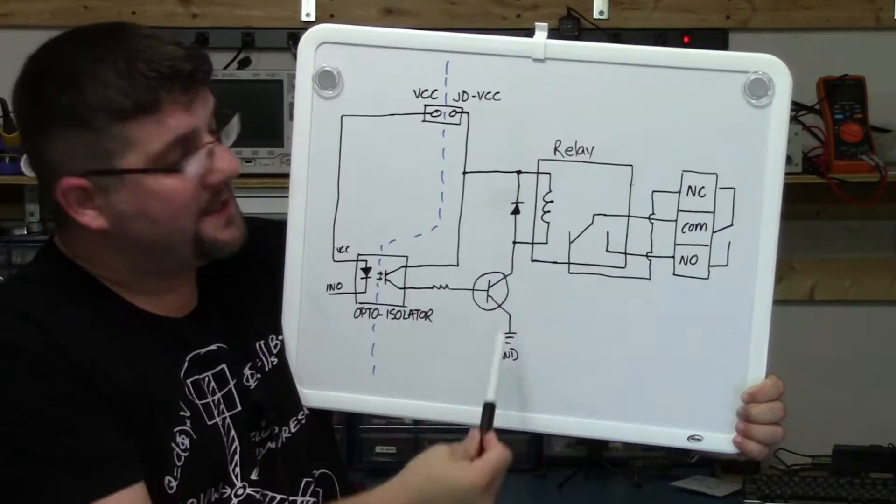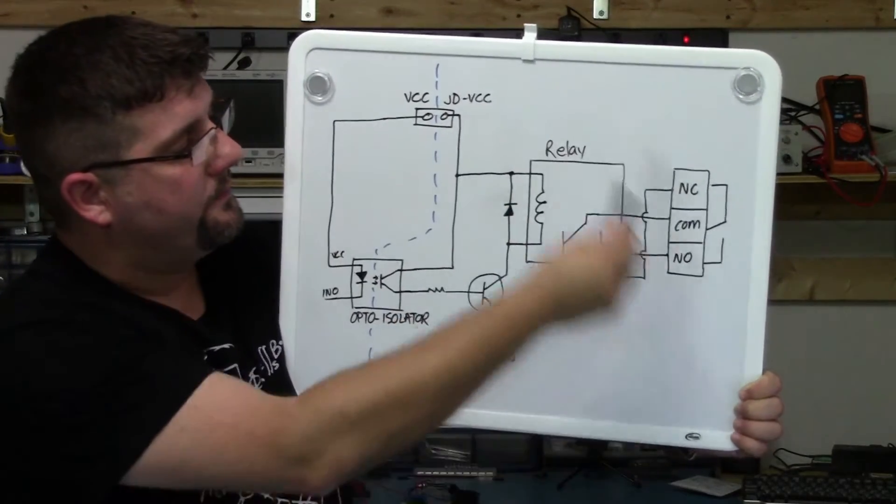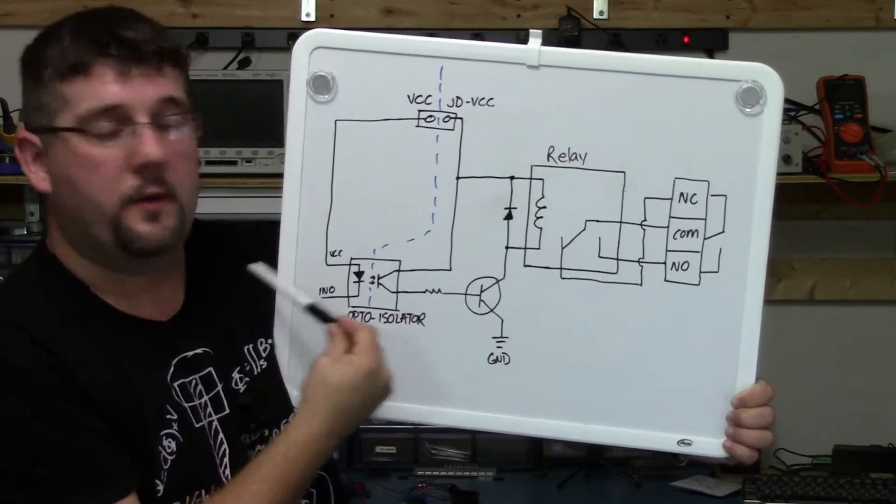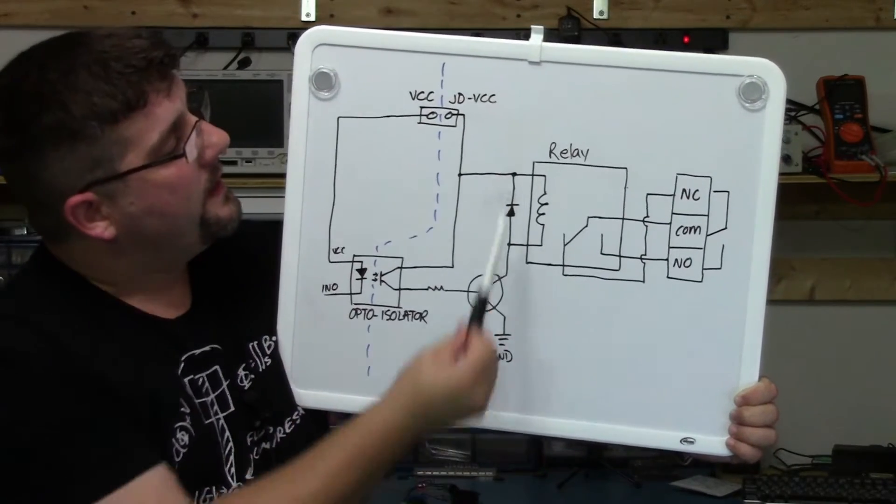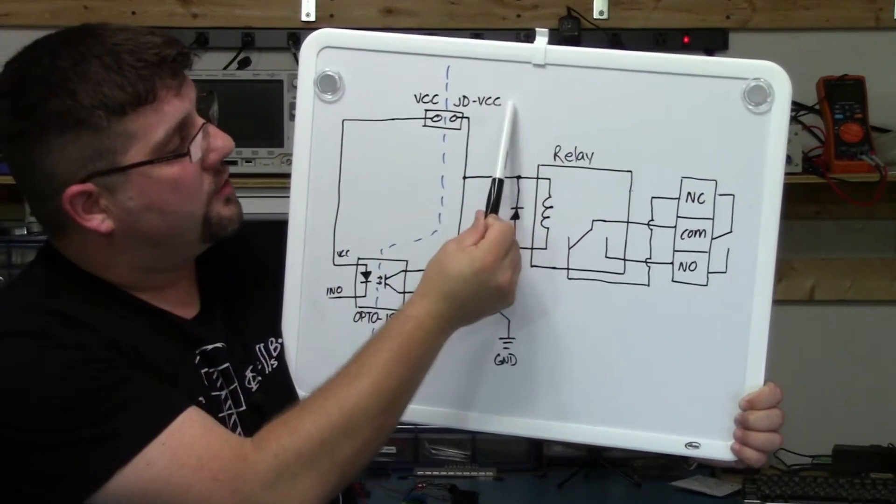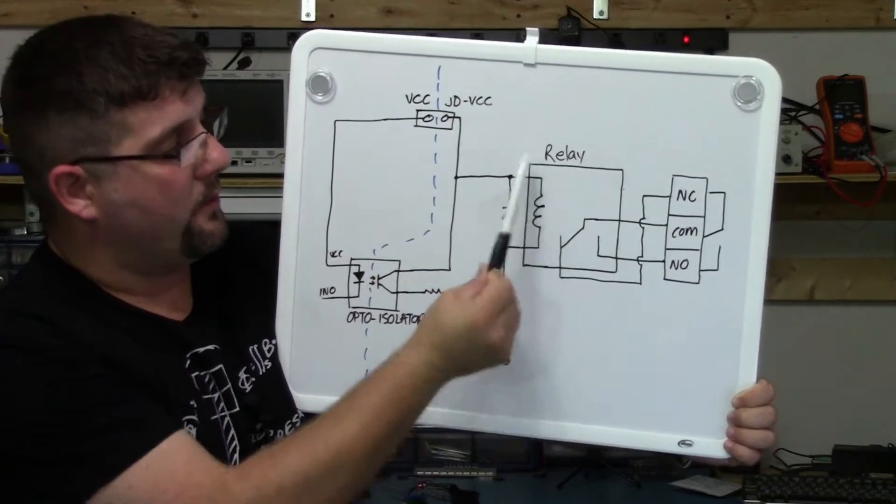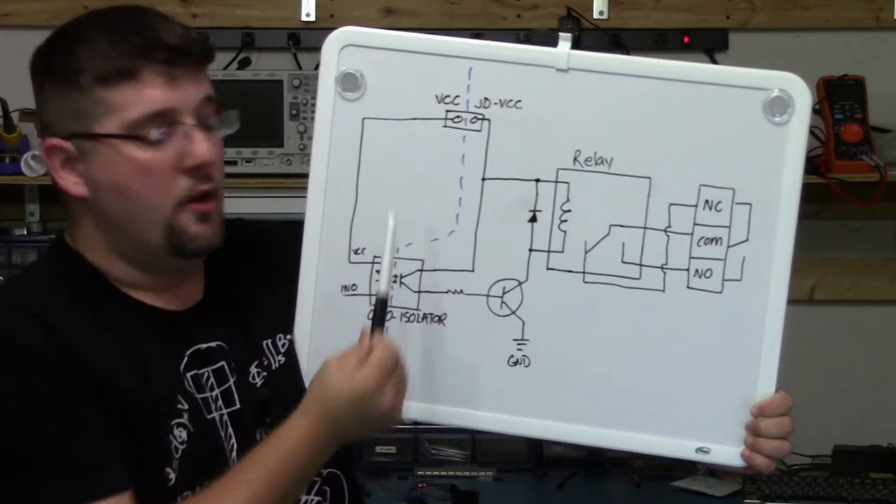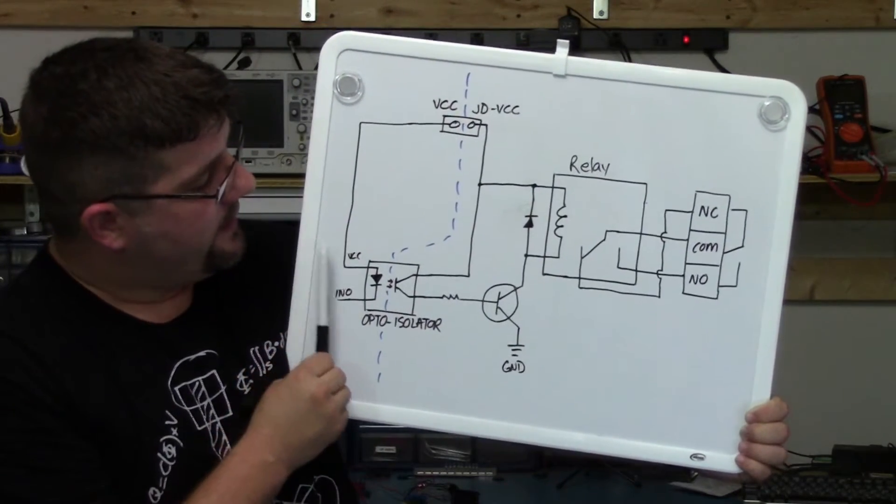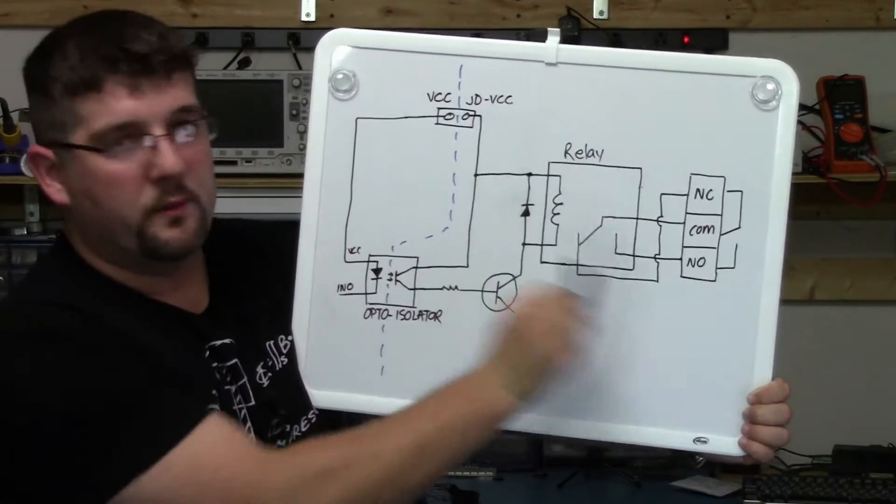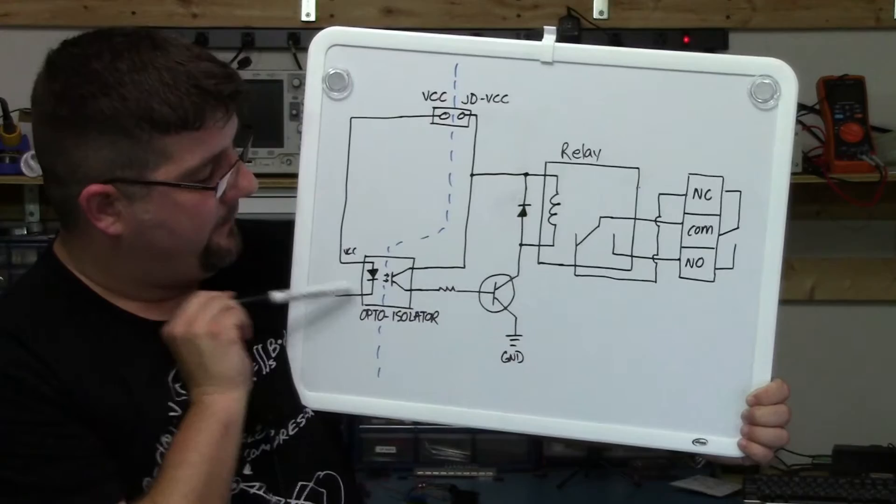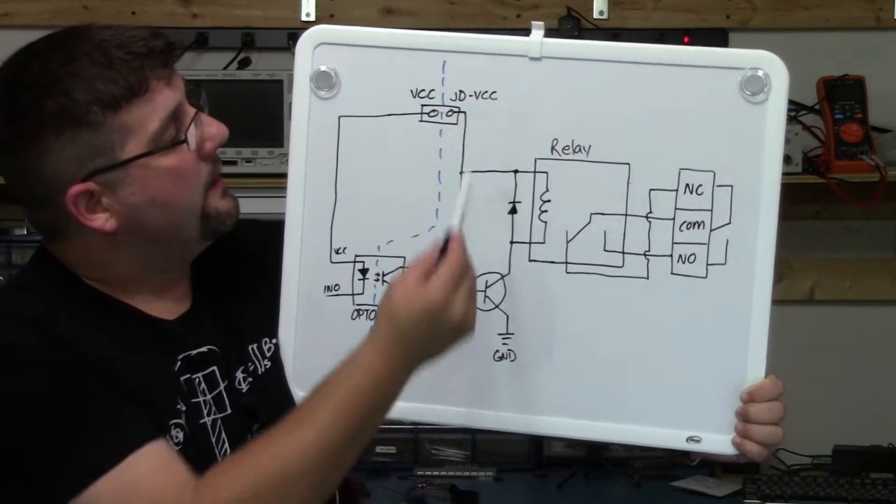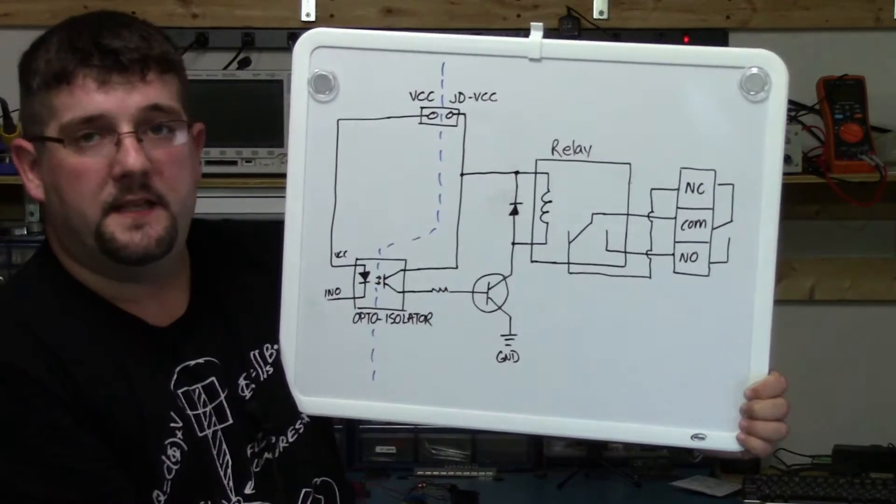Well, if I'm not opto-isolated from everything that's working over here, and something goes wrong, that can then feed back directly into my Arduino through this connection. If I am using an external power supply and not the Arduino to power the relay, well then this blue line represents that separation. Not once does the Arduino circuit ever physically touch the rest of the relay board module, outside of activating the opto-isolator.